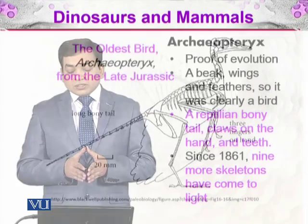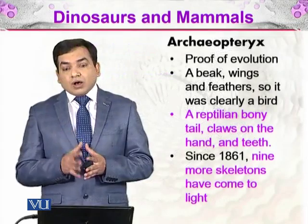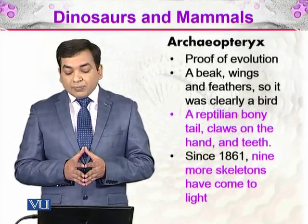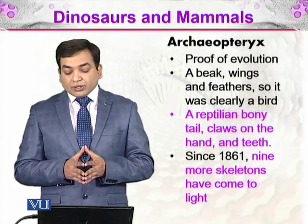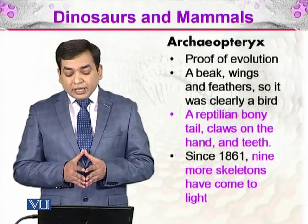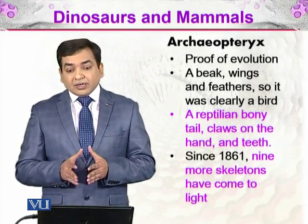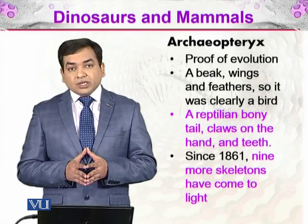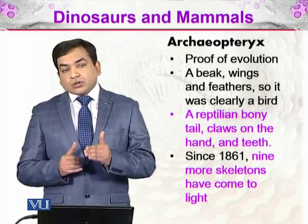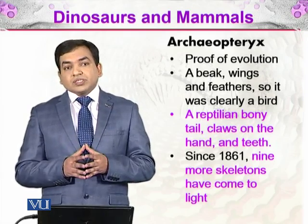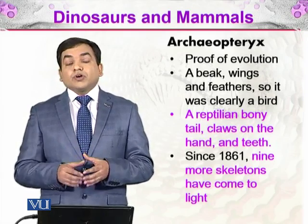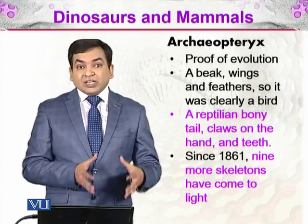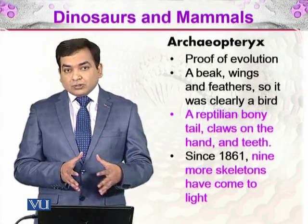Archaeopteryx gives proof of evolution. It had a beak, wings, and feathers — so it was clearly a bird. It also had a reptilian bony tail, claws on the hand, and teeth, which are the characteristics giving it a reptilian status.